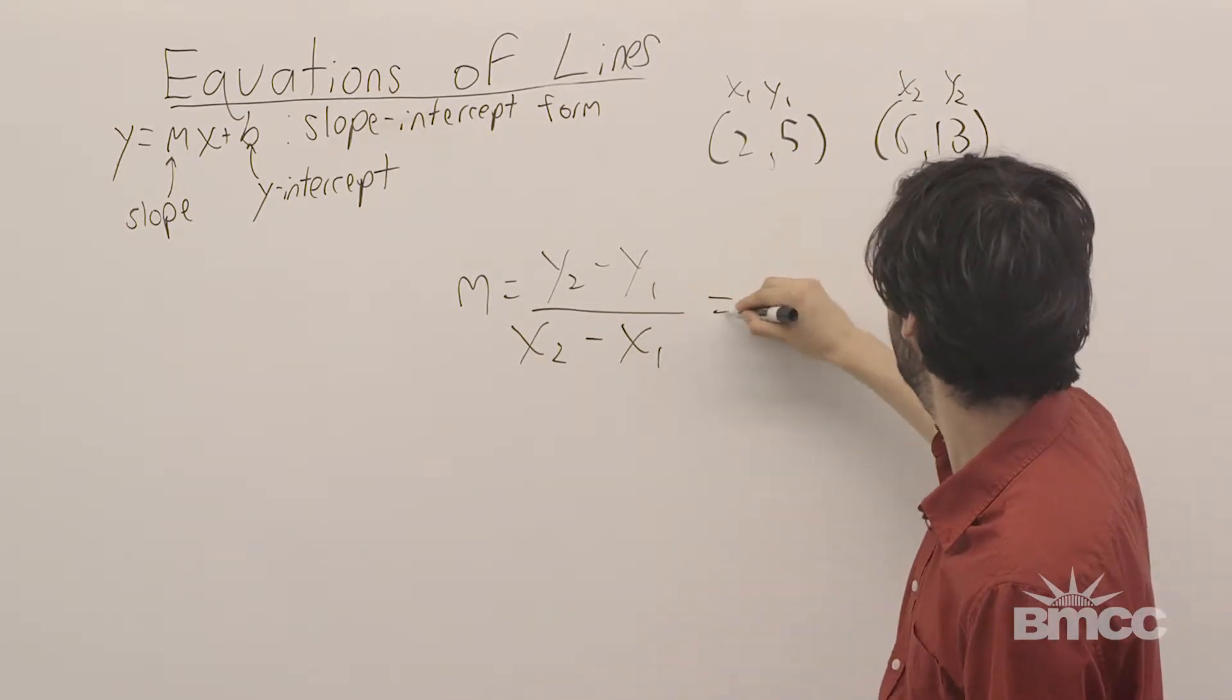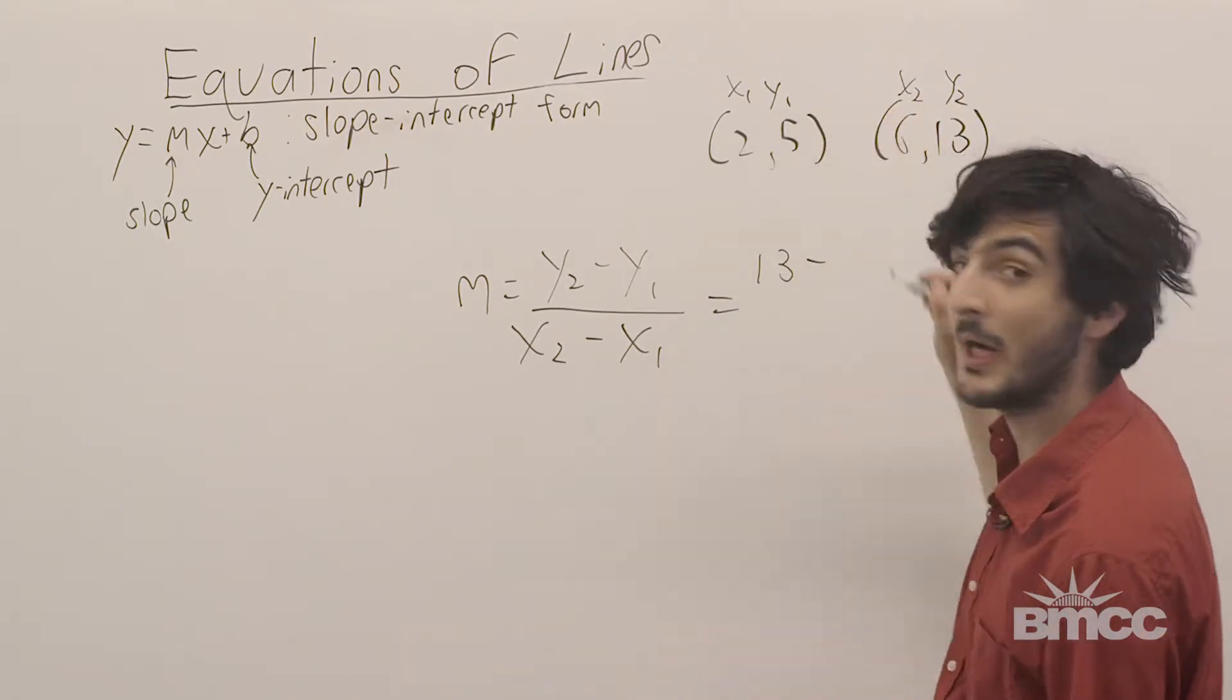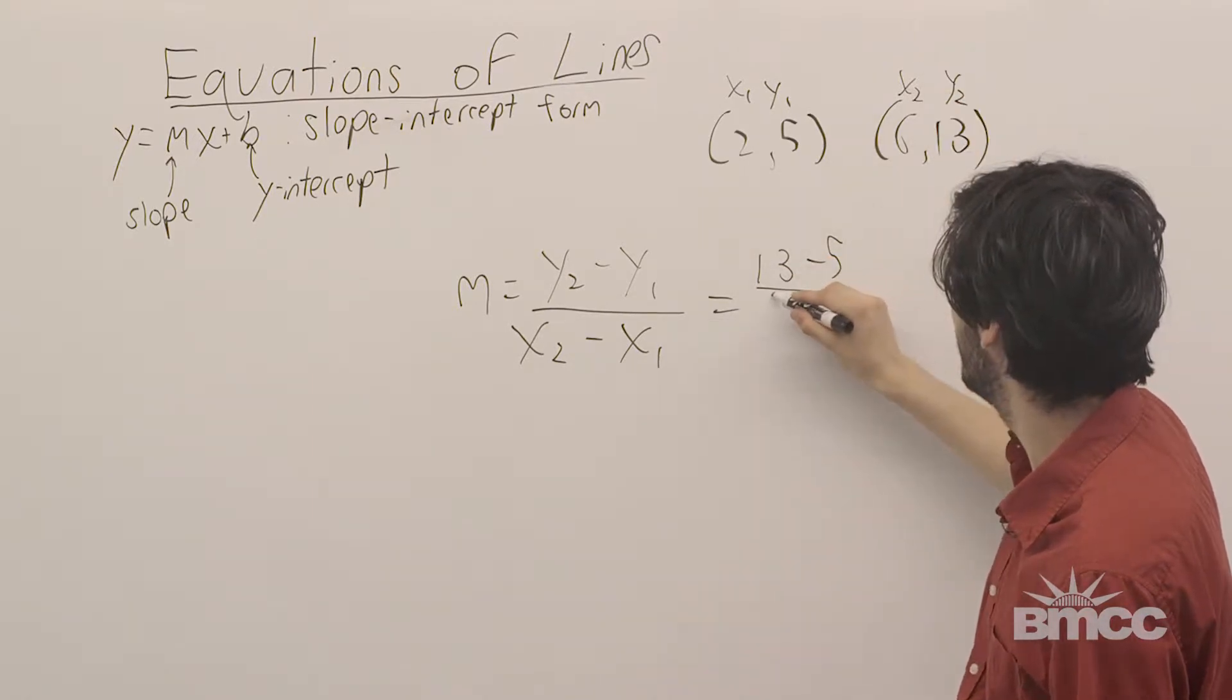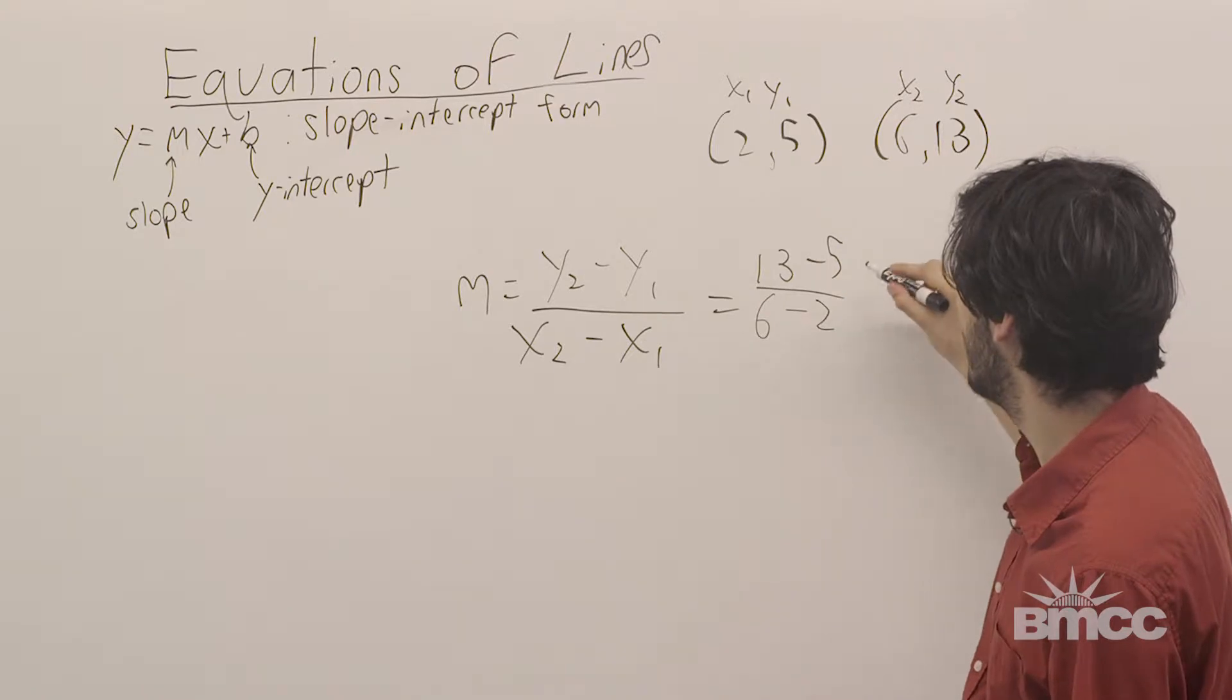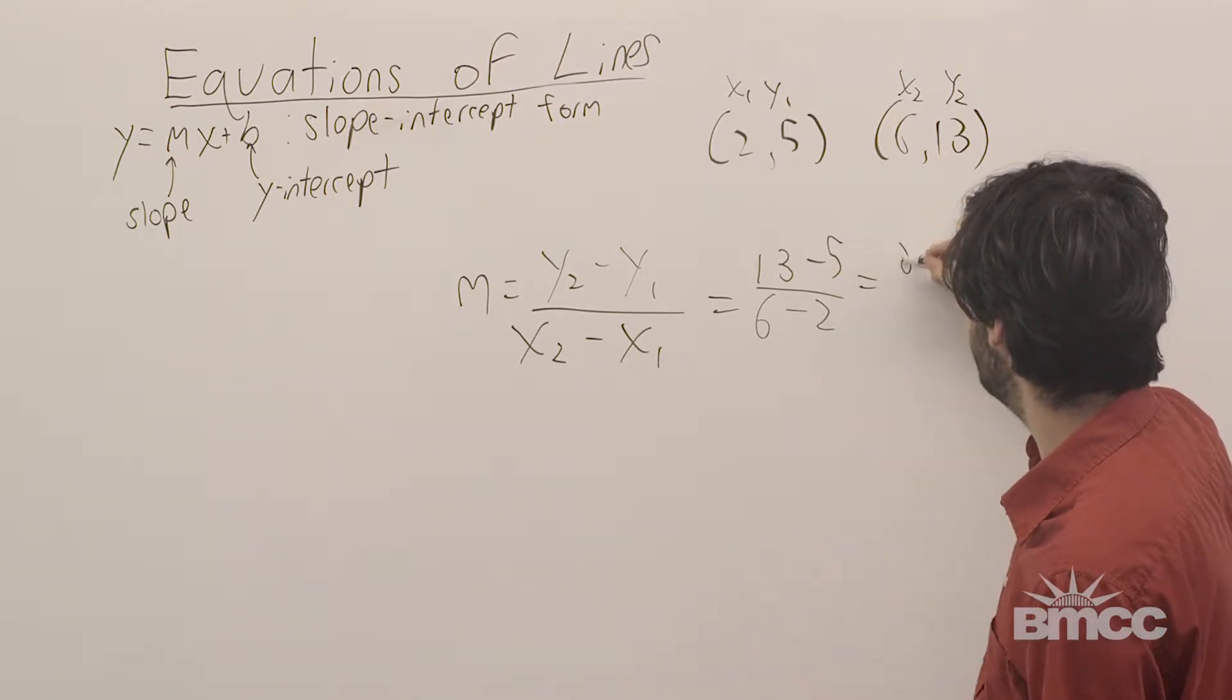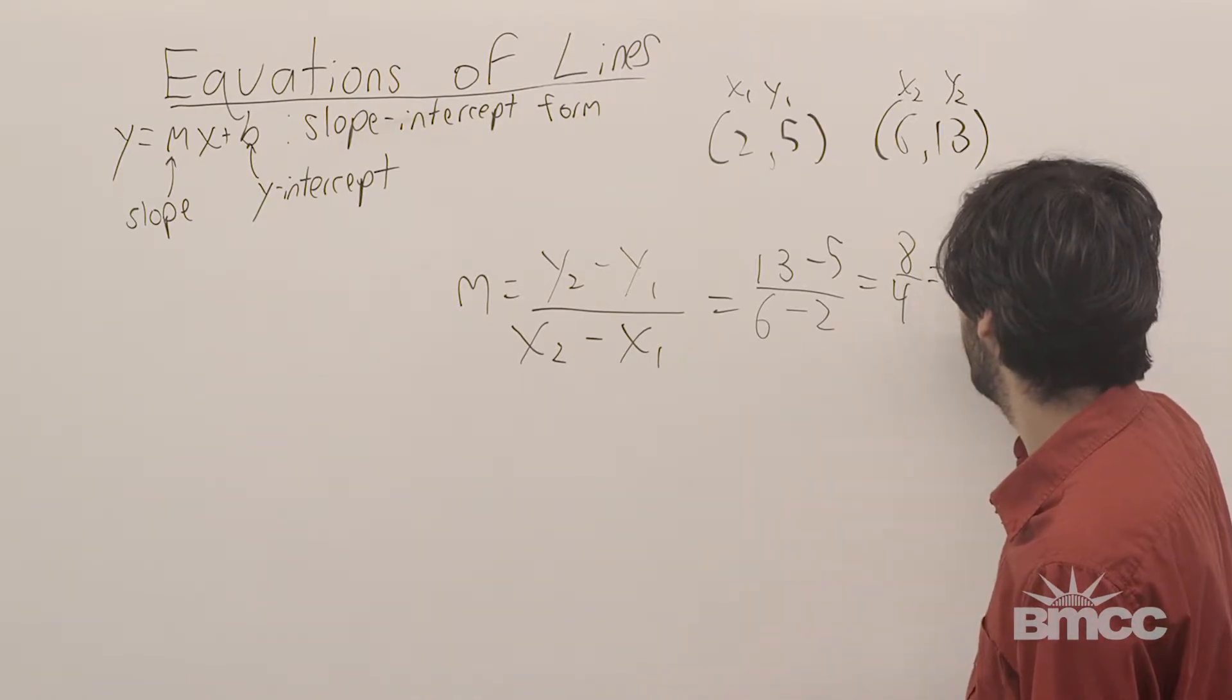So, given these two points, we have y2, 13 minus y1, which is 5, over x2, which is 6, minus x1, which is 2. 13 minus 5 is 8, divided by 6 minus 2 is 4, which gives us 2.